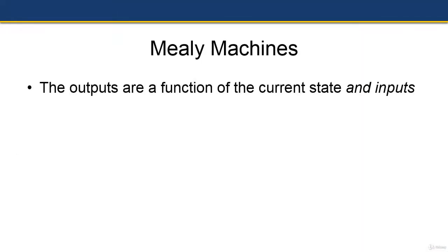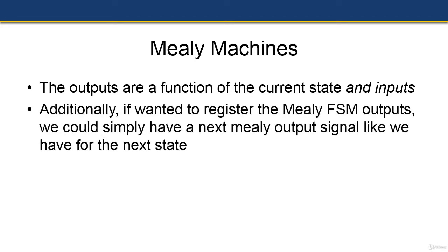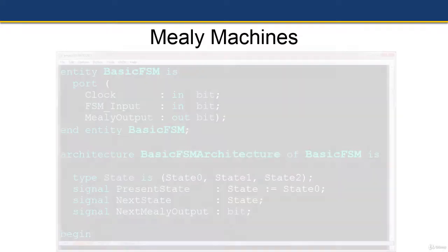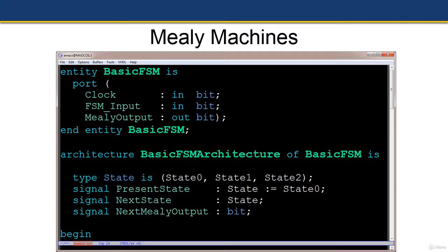For a Mealy state machine, the output is a function of the current state and inputs. Since the next-state combinatorial process is also a function of state and inputs, we can simply add the Mealy output signal assignments within the same process. If we want to register the Mealy FSM outputs, we can add a next_mealy_output signal, just as we have for next state.